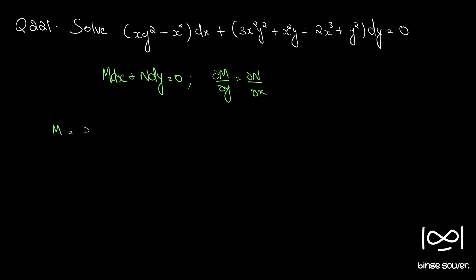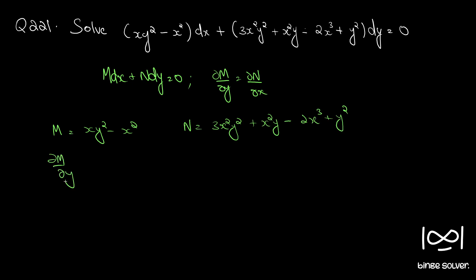Here M = xy² - x² and N = 3x²y² + x²y - 2x³ + y². So ∂M/∂y = 2xy, and ∂N/∂x = 6xy² + 2xy - 6x².